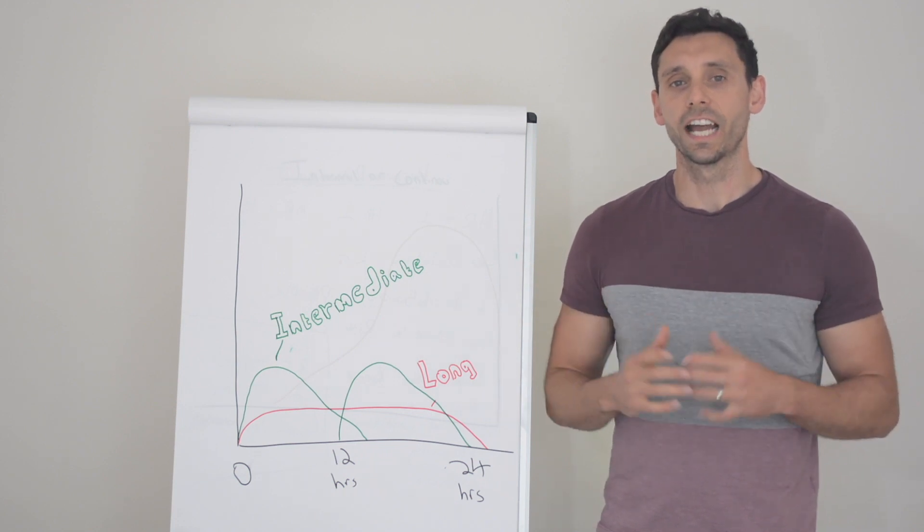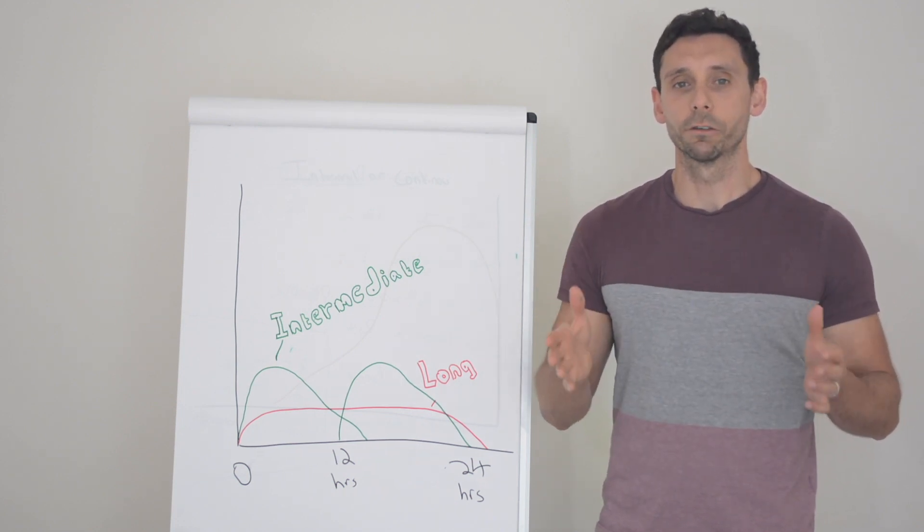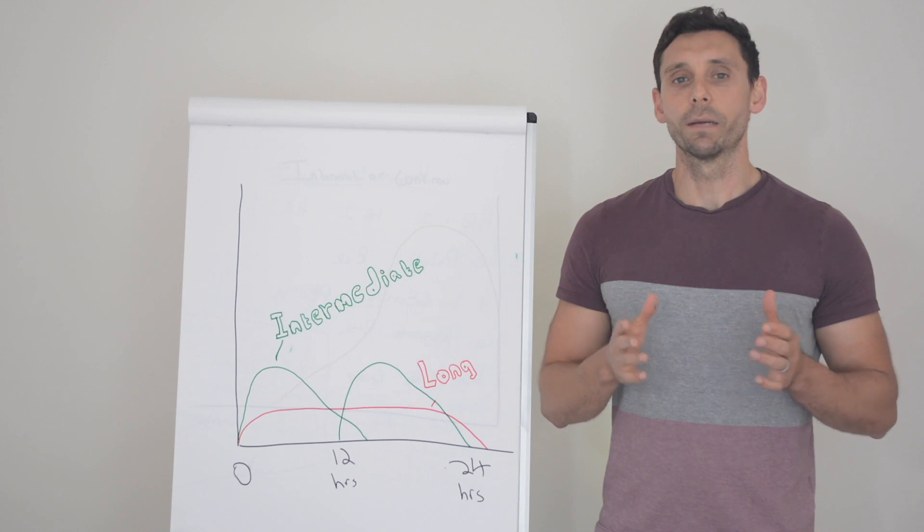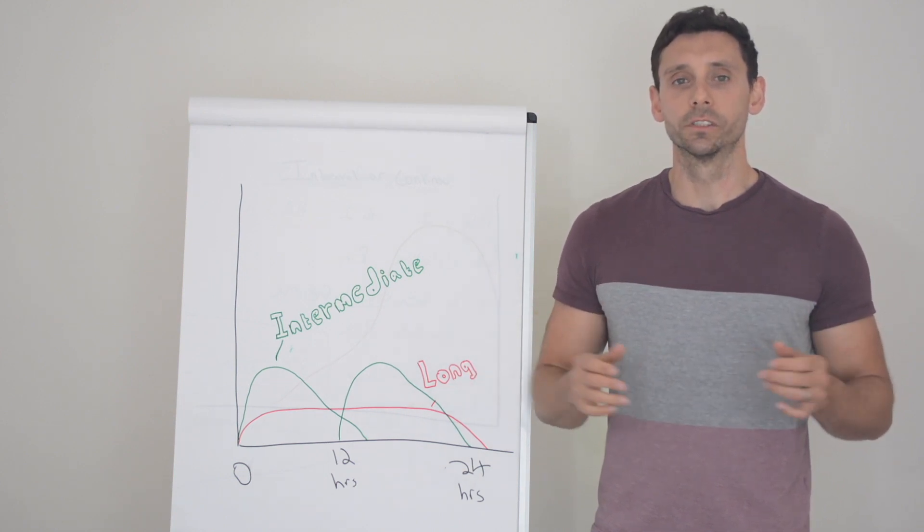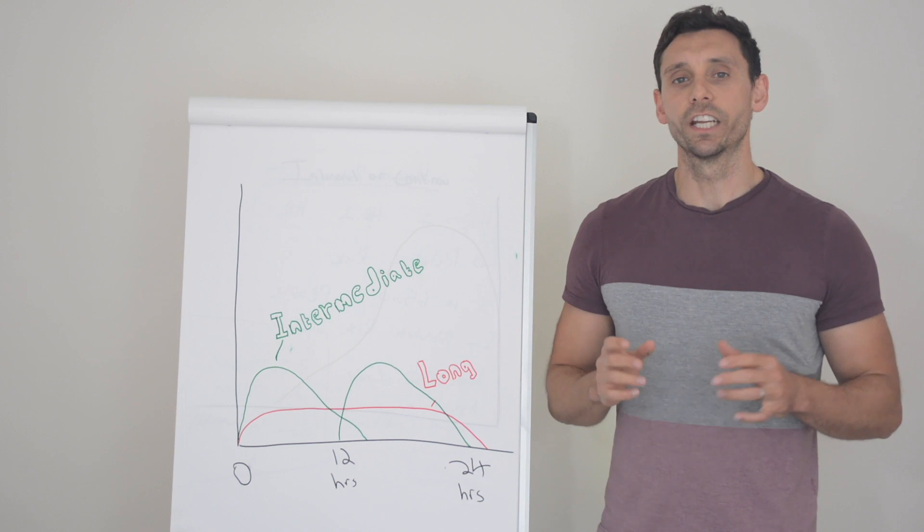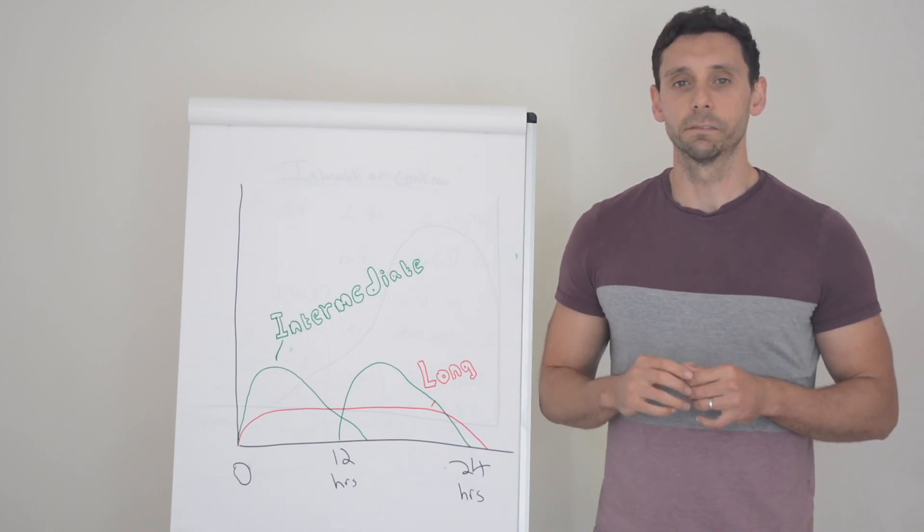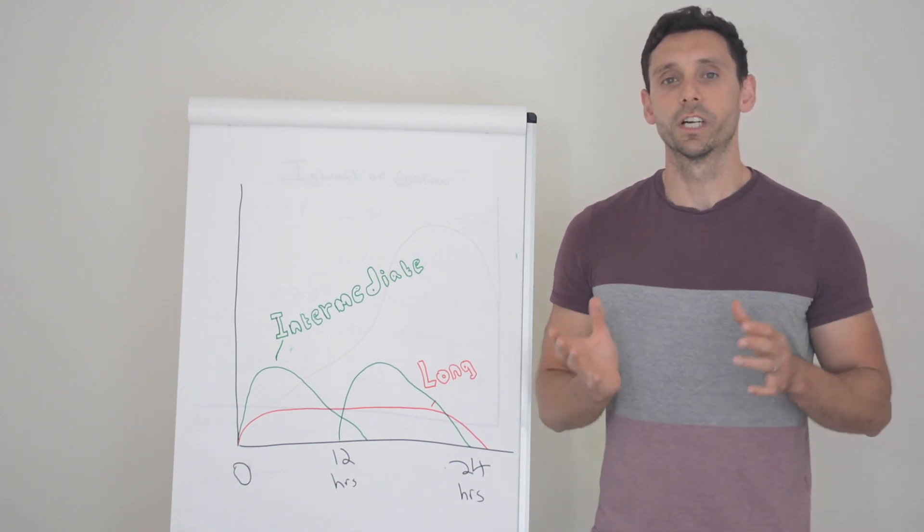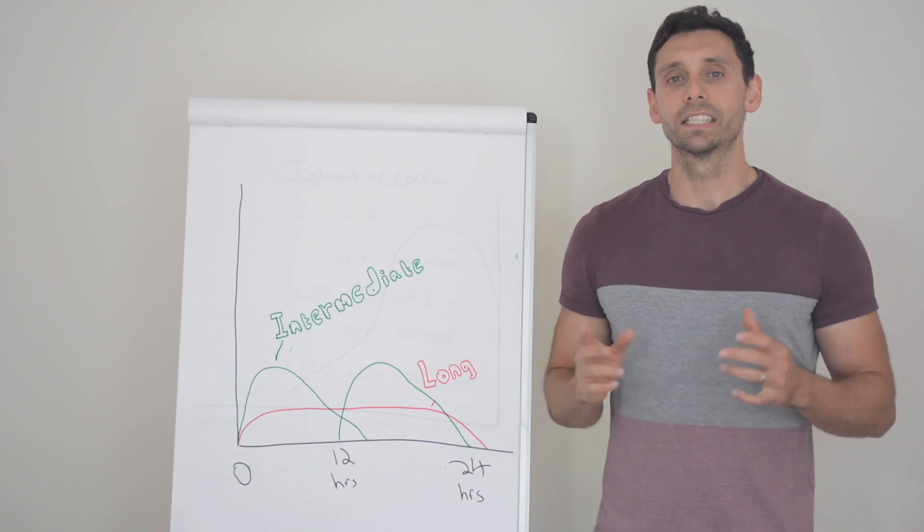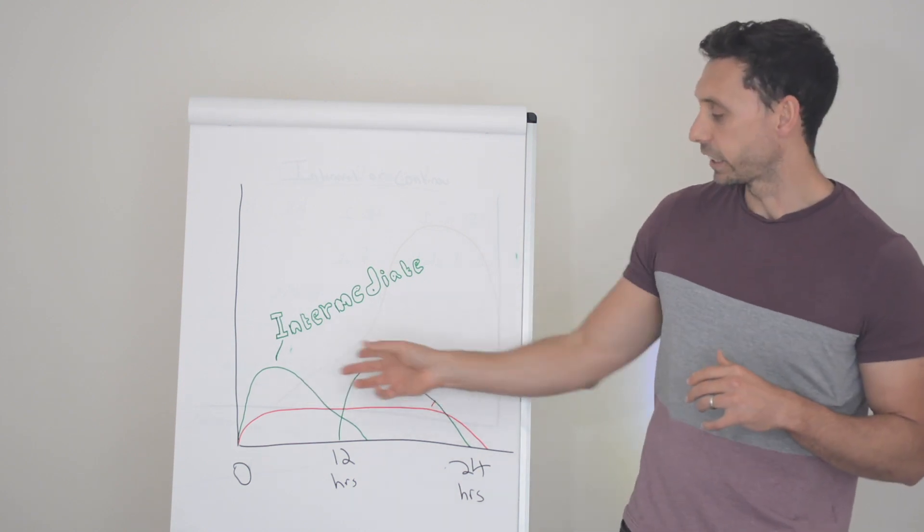Intermediate acting insulins are just that, they act for an intermediate amount of time. So usually that's anywhere between 12 to 16 hours. So you do not get a full 24 hour insulin coverage if you're using intermediate acting insulin. This is why people that used to take this with type 1 diabetes would need to take it twice a day as shown by the green here on our graph.